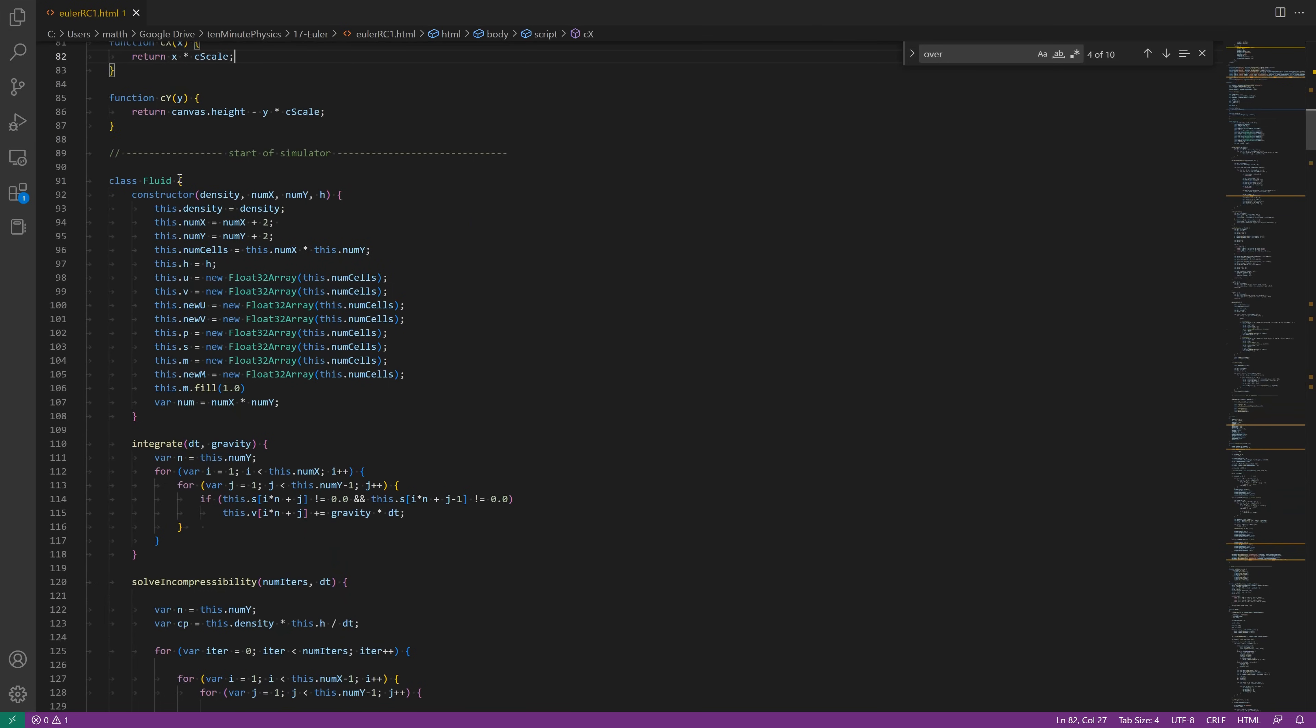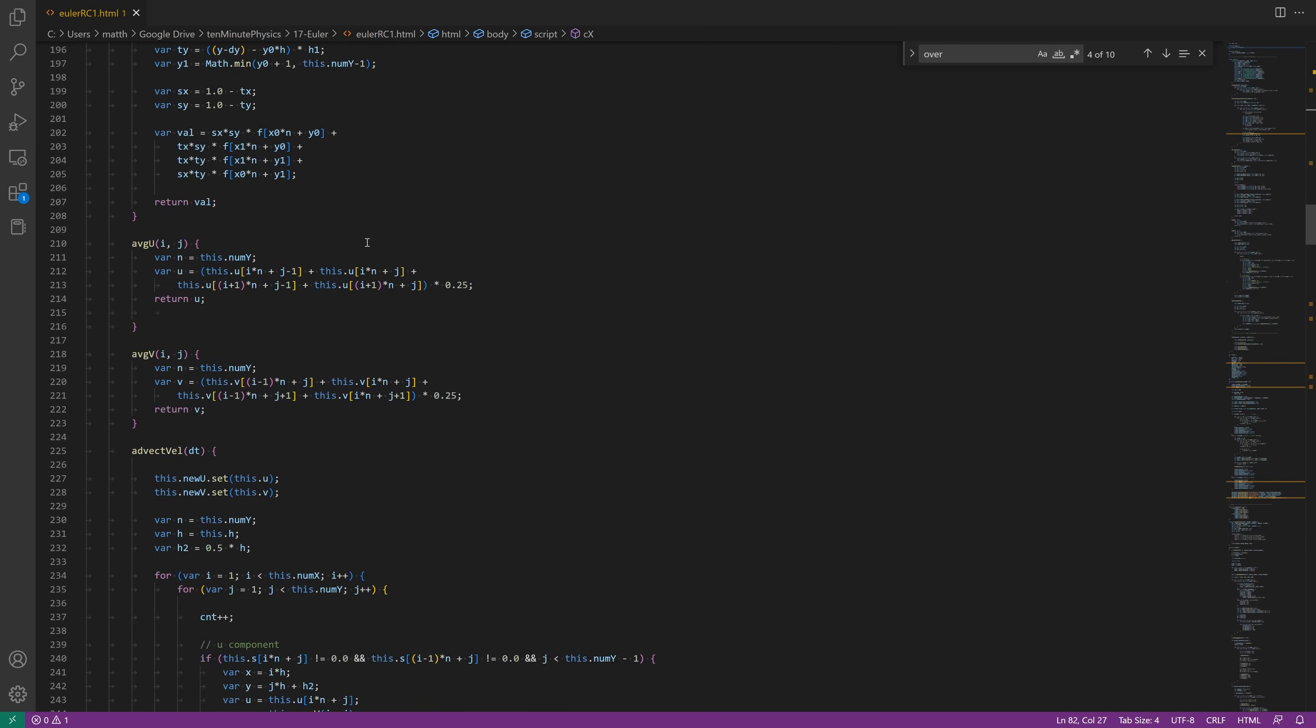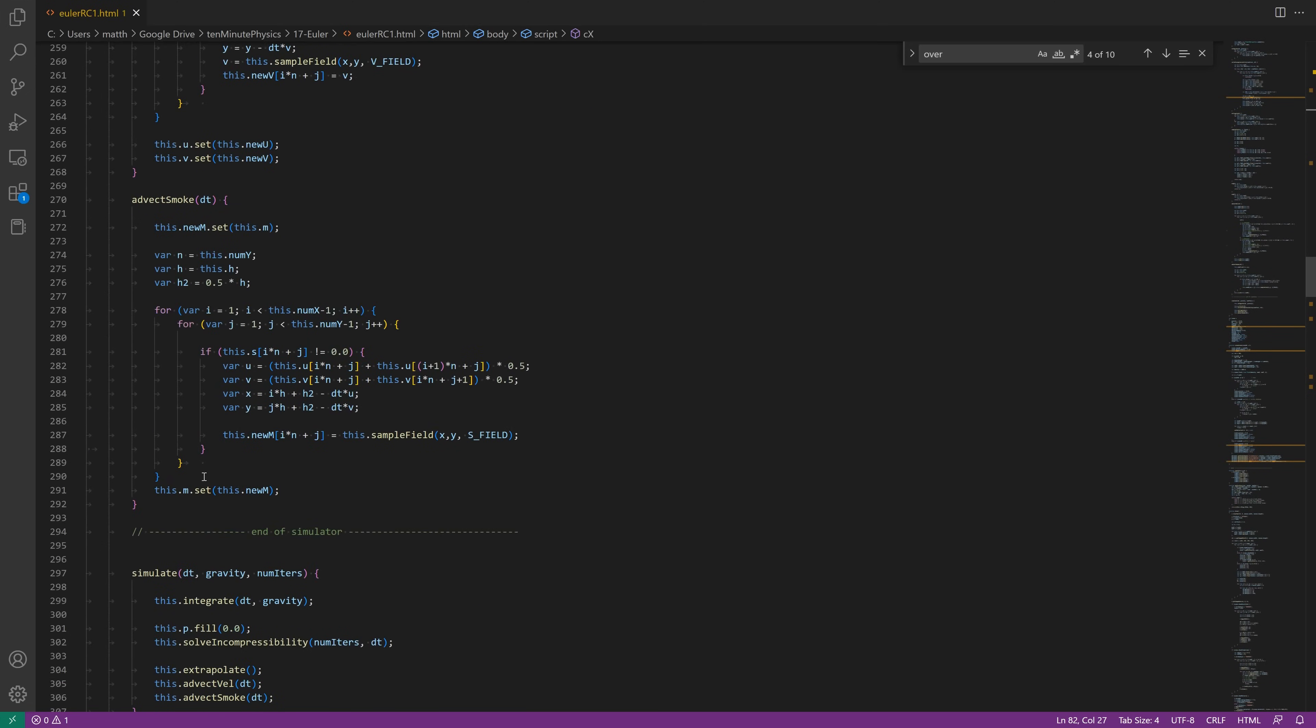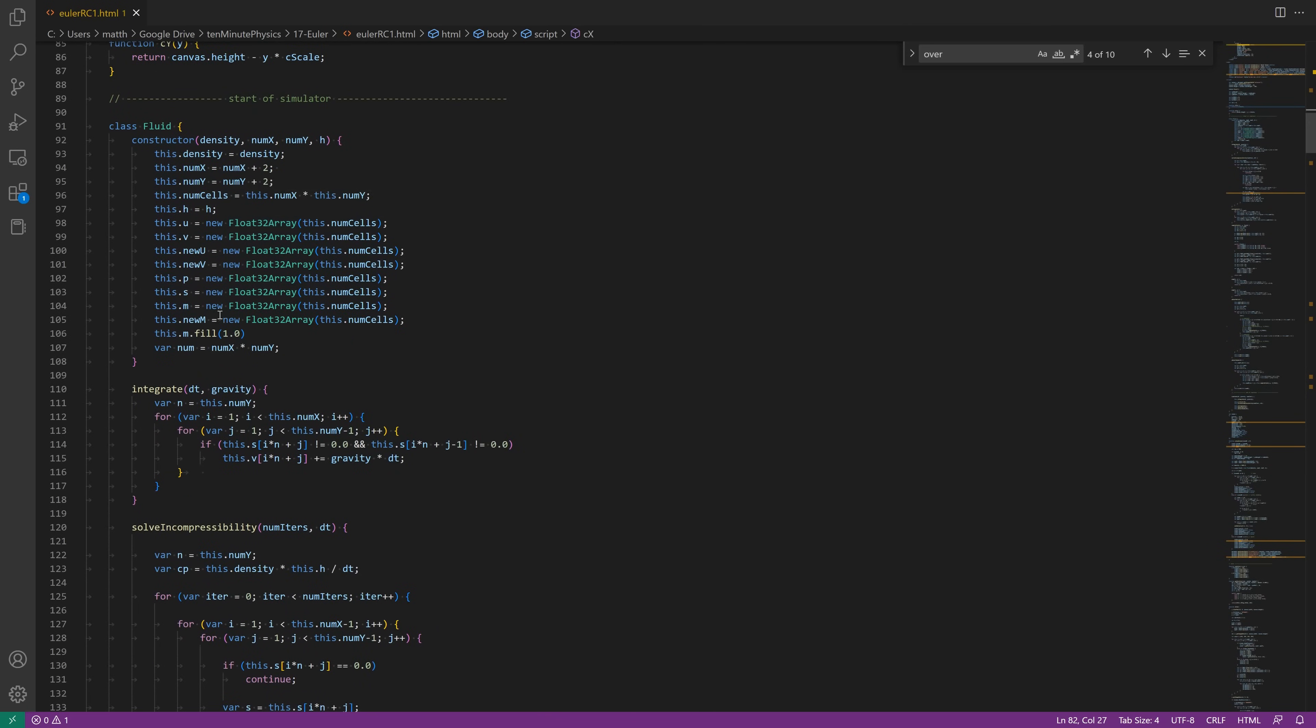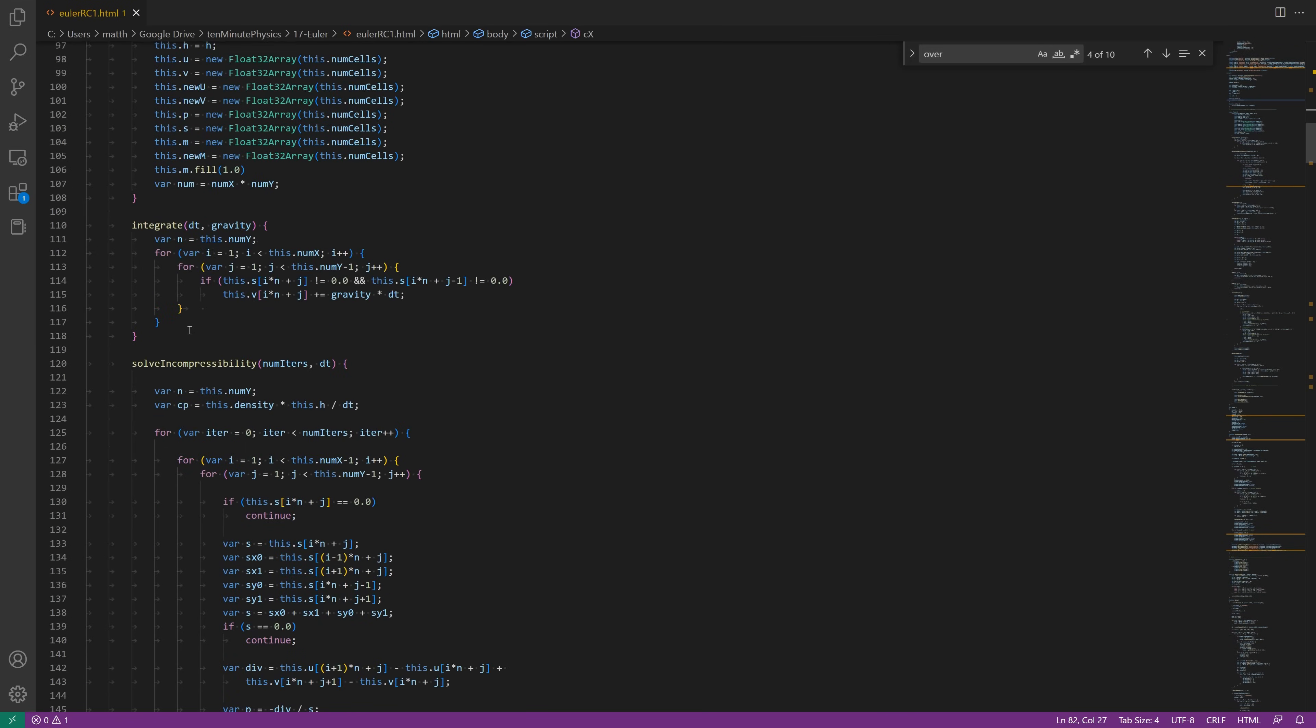Now let's have a look at the code. The simulator is implemented in the class fluid. It starts at line 90 and ends at line 290. So 200 lines as I promised. Advect smoke is not even a part of the simulator. In the constructor, I initialize all the necessary fields like the U and V fields, the pressure field and the smoke field. In the integration step, I simply add gravity times dt to the v components of all cells.